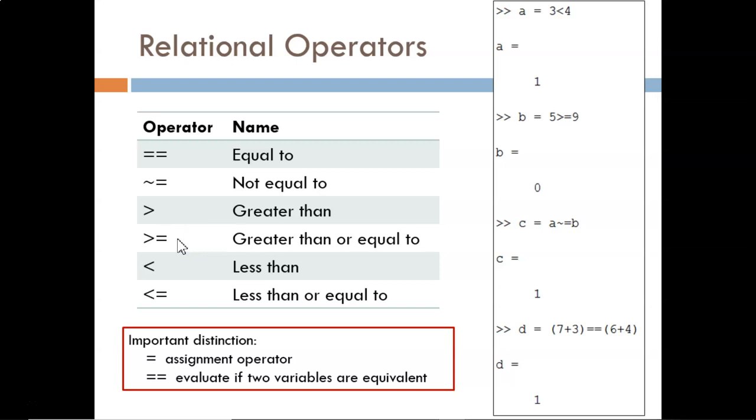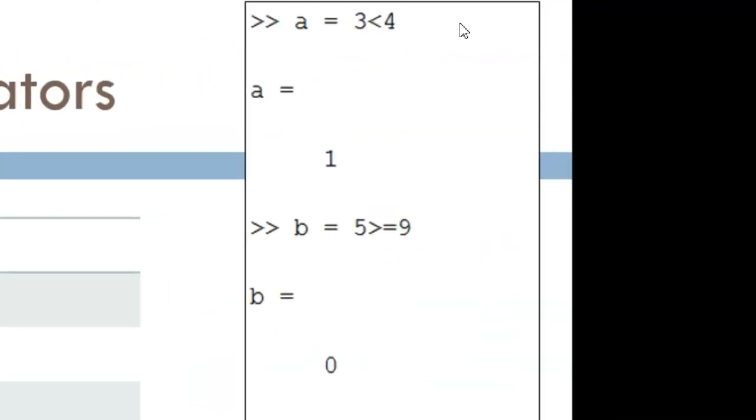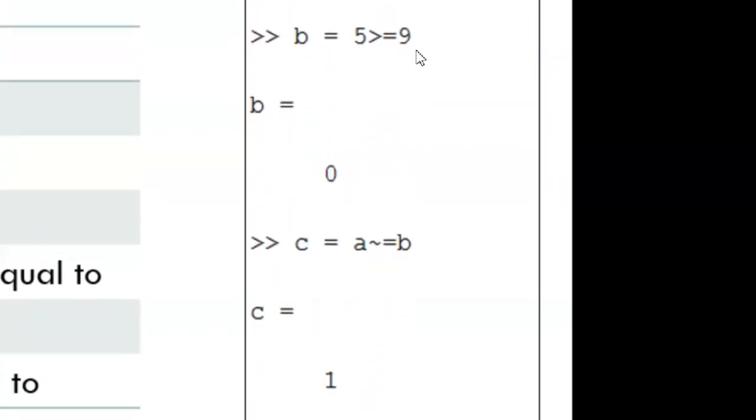On the right are some examples of using the relational operators. At the top, we first ask the question, Is 3 less than 4? That is true, so then we store that result into A using the assignment operator, or single equal sign. This result will display in the command window as a 1, although it is stored in memory as a true. For B, we see that 5 greater than or equal to 9 is a false statement. For C, we ask the question, Is A not equal to B? Well, A is true and B is false, so A does not equal B, and so the statement is true.